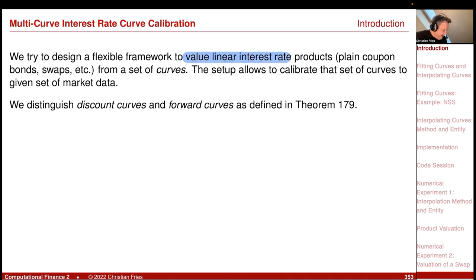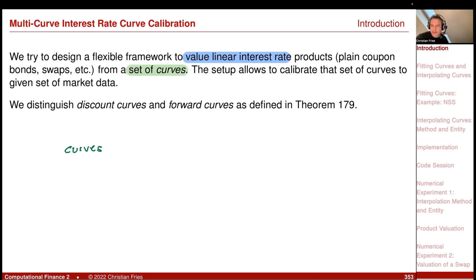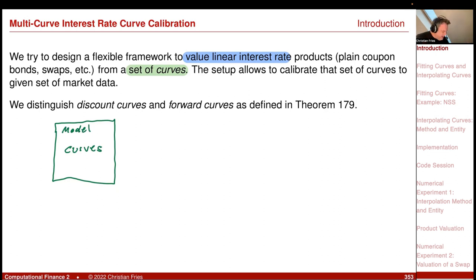So plain coupon bonds and swaps on a given set of interest rate curves. On one side we have our curves — discount curves and forward curves. These form a set of multiple curves, maybe call that a kind of a model. And from that, I can value financial products.